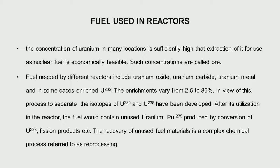After utilization in the reactor, the fuel could be uranium oxide, uranium carbide, or uranium metal. Uranium metal was used in initial reactors, but due to its low melting point it was felt that to go to high temperatures we should use a ceramic. So people moved to uranium oxide, which has been very widely used. Uranium carbide has also been used.